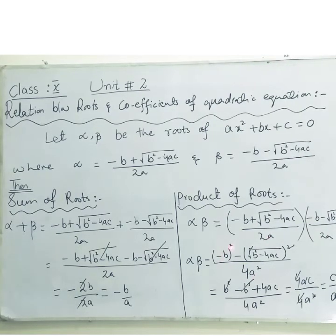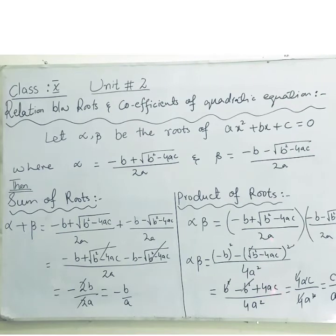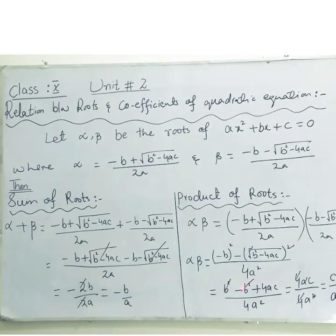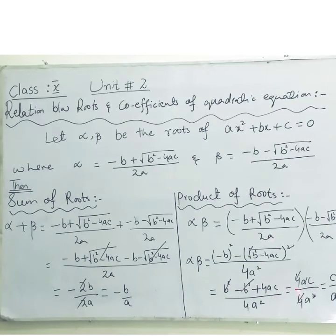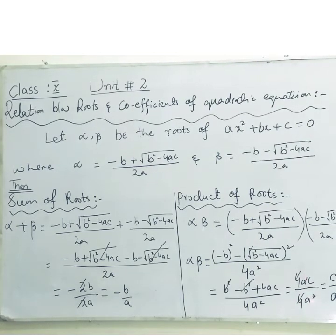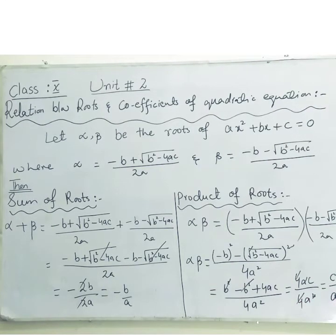Now (-b)² = b², so we have b² - (b² - 4ac) = b² - b² + 4ac. The b² terms cancel, leaving 4ac divided by 4a². The 4s cancel and one a cancels, giving us c/a.